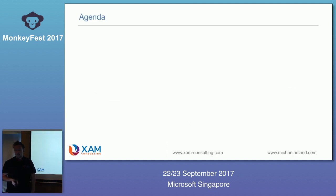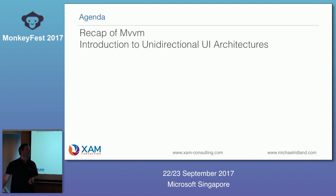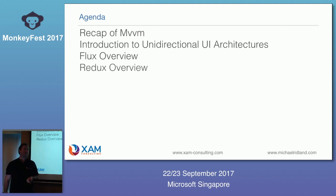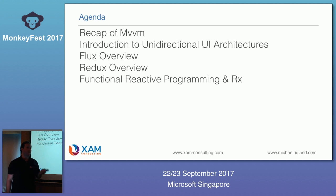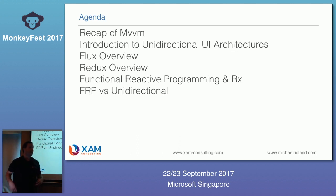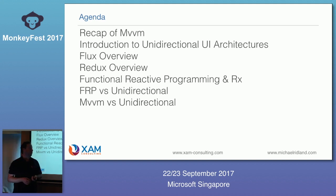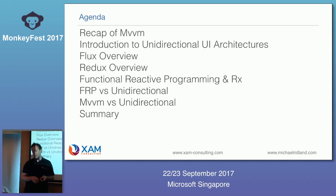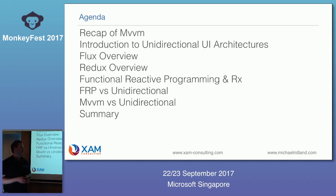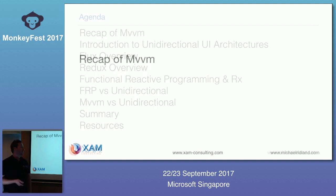Here's the agenda: we'll start with a recap of MVVM, then an introduction to unidirectional architecture, then Flux and how it started, Redux as an implementation of Flux, functional reactive programming and Rx, and a comparison of functional reactive programming with unidirectional — because when I started looking into this it was really confusing how everything fit together. Then MVVM versus unidirectional, a summary, and resources.